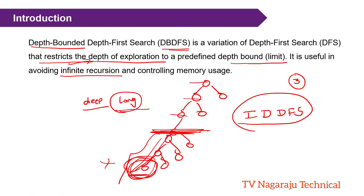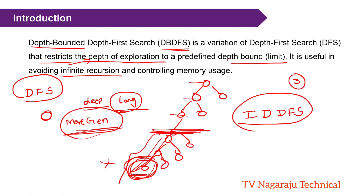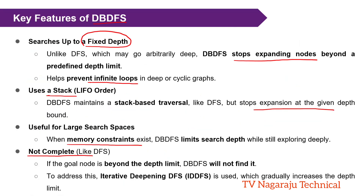To overcome this problem we move to Iterative Deepening DFS. It gradually increases the depth limit each iteration. DB-DFS is completely different from DFS — while exploring a node, the recursive function is called only if the current depth is within the given bound. Only then does it expand the node.